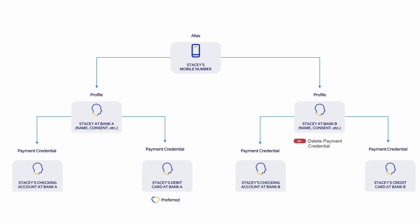As we reach the end of the user journey, let's talk about the delete payment credential and the delete alias APIs. These APIs are important for managing user data within the directory. If a user wishes to remove a payment credential such as a card or bank account from their profile while keeping the alias active, they can use the delete payment credential API. For instance, Stacey may have lost her debit card and reported this to bank B. In this scenario, bank B will need to use the delete payment credential API to remove this credential from Stacey's profile as it's no longer active. Once they have issued Stacey with a new card and a new PAN, they will then need to use the create payment credential API to add this new debit card back onto her alias profile.